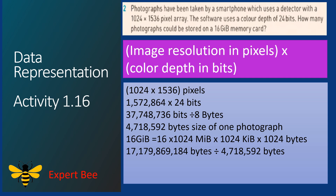Now we find the total number of photographs that can be stored on the 16 GB memory card. We divide 17,179,869,184 bytes by 4,718,592 bytes per photograph and get 3,640. This is the total number of photographs that can be stored on a 16 GB memory card.